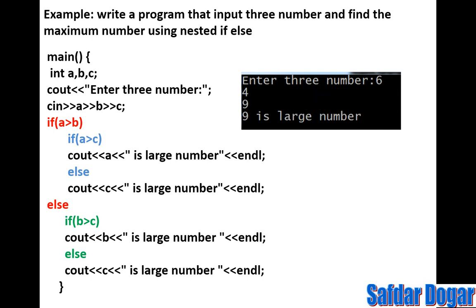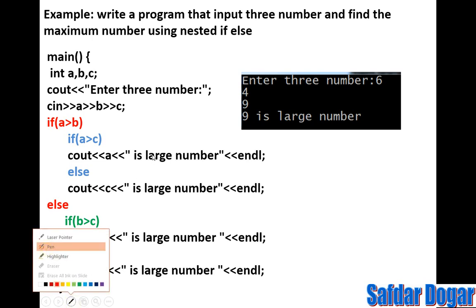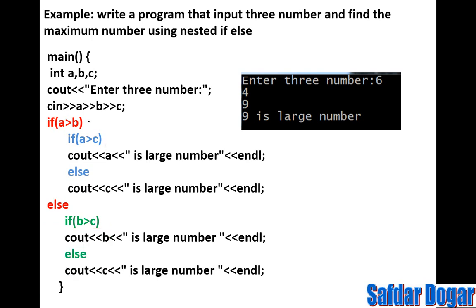Let's look at the output. We give the first number A as 6, B as 4, and C as 9. We have given three numbers and we need to find which is the biggest. The first condition checks: is 6 greater than 4? This condition is true. When the condition is true, B is eliminated and we compare A and C. Our next condition becomes: is 6 greater than 9?